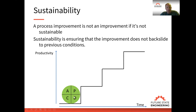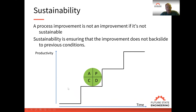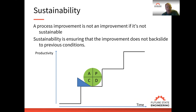So we do the PDCA analysis, we implement the improvement, and we gain some level of productivity. We jump up to the next level. What we want to do is prevent backsliding, so we have to put a wedge in place to prevent that backsliding and ensure that we can use that foundation for the next level of improvement.